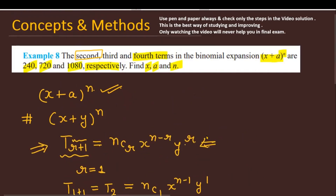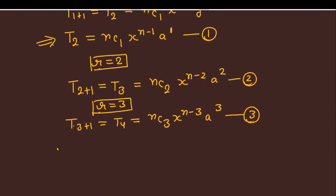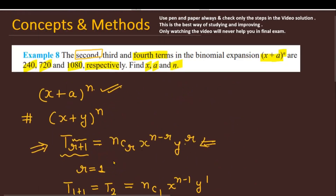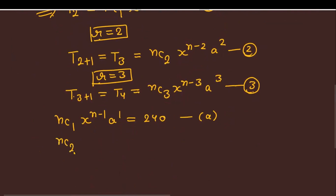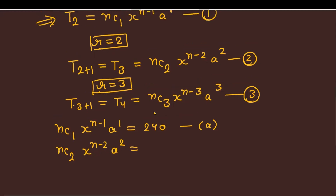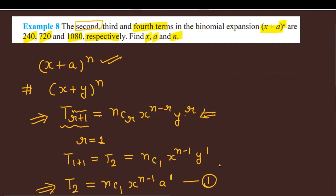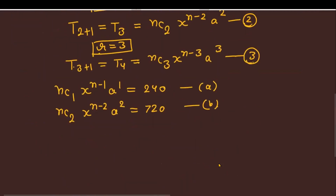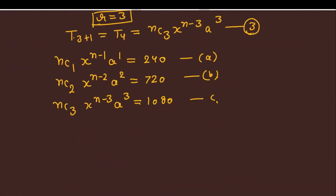Now applying the given conditions: the second term equals 240, so nC1 * x^(n-1) * a = 240 — this is equation (a). The third term equals 720, so nC2 * x^(n-2) * a^2 = 720 — equation (b). The fourth term equals 1080, so nC3 * x^(n-3) * a^3 = 1080 — equation (c).